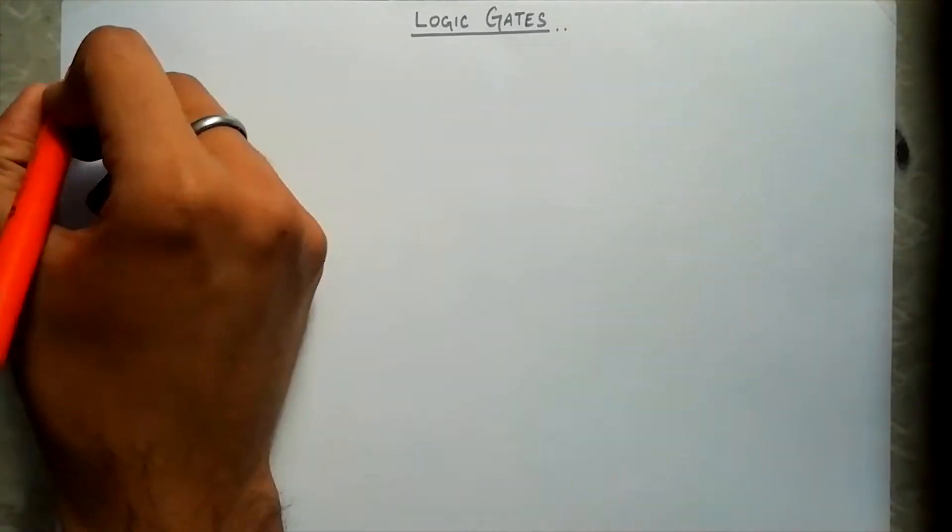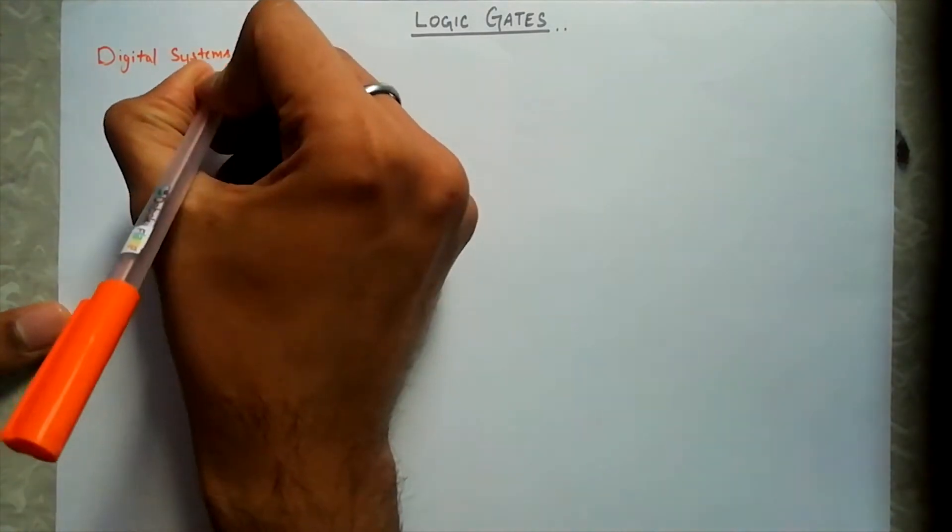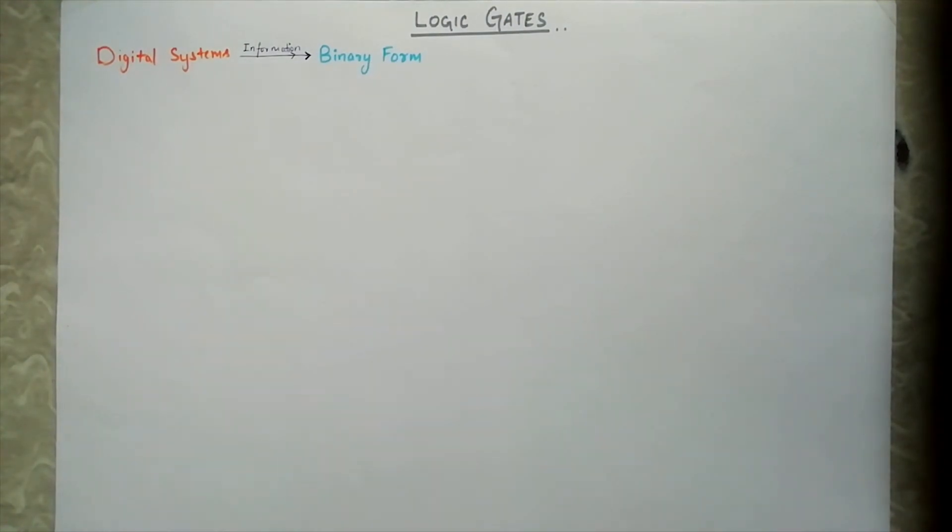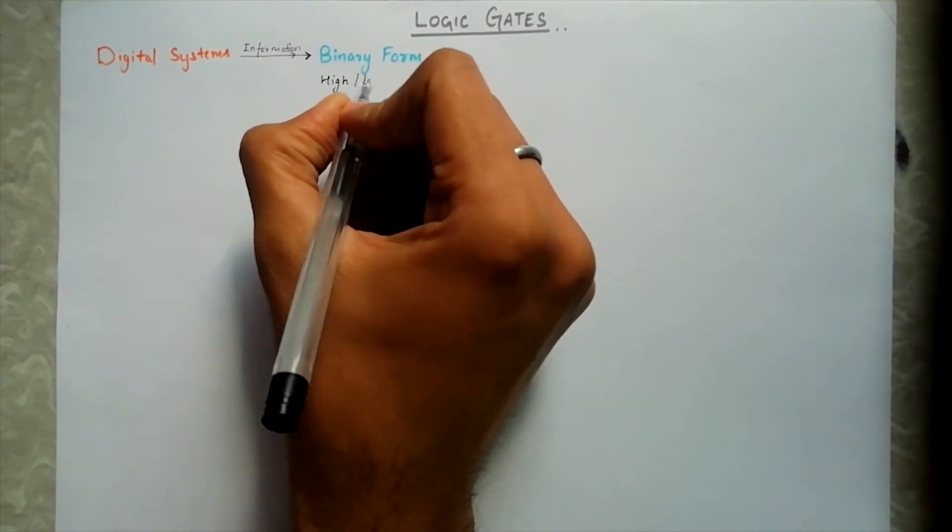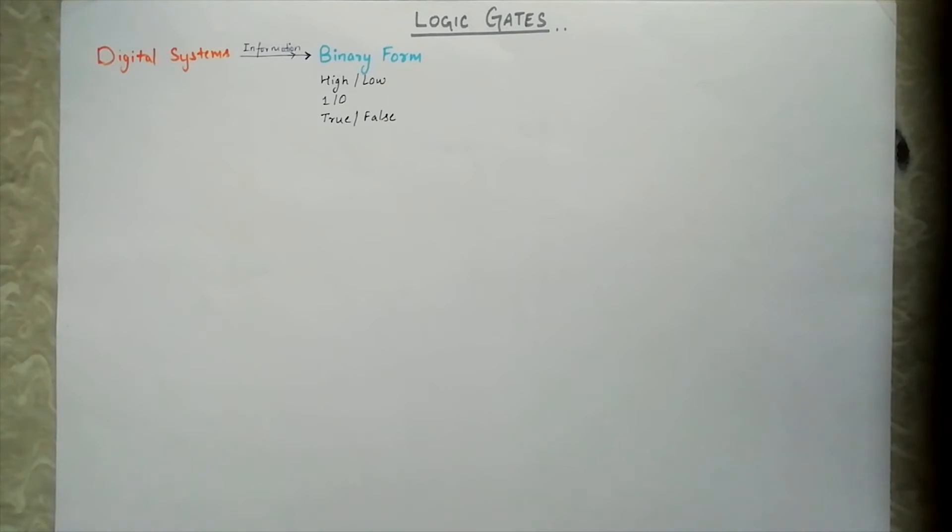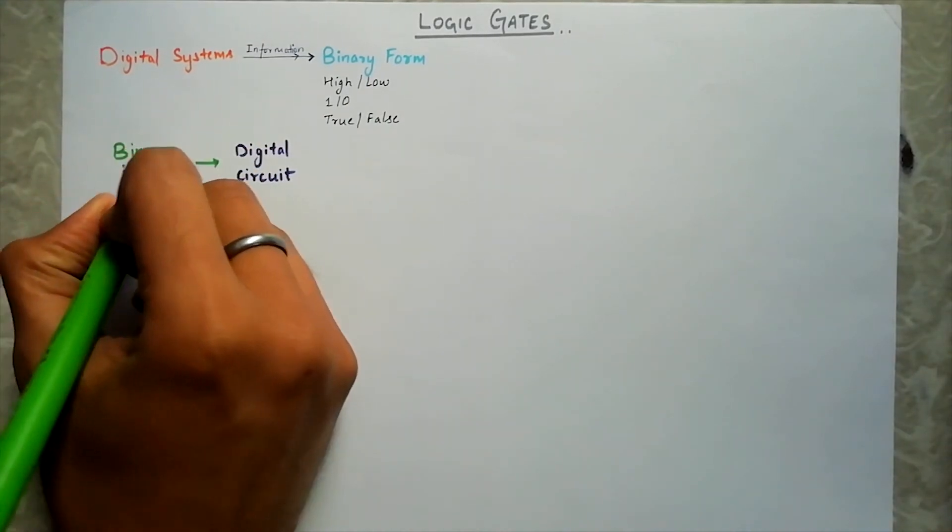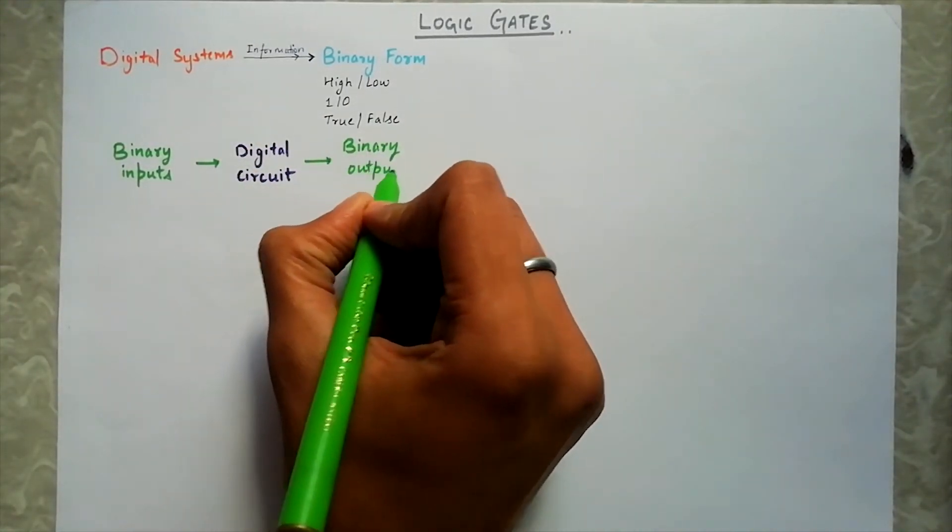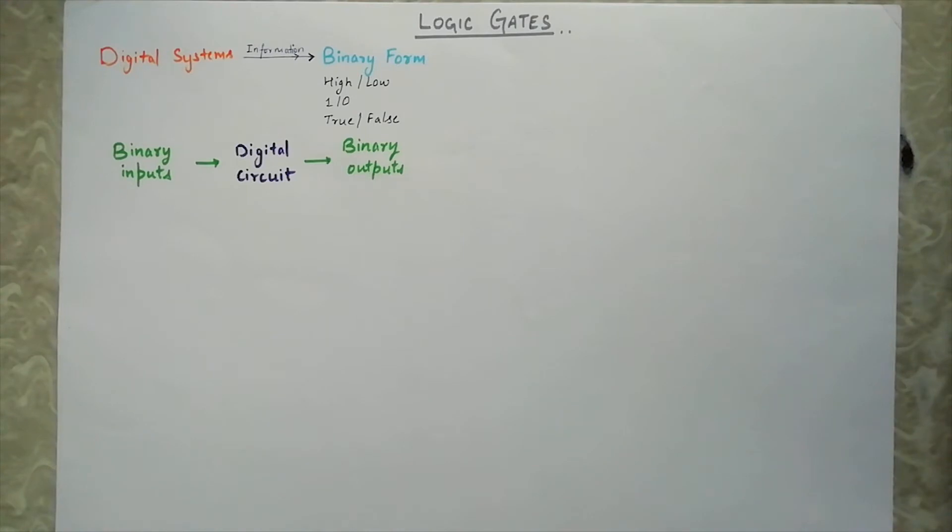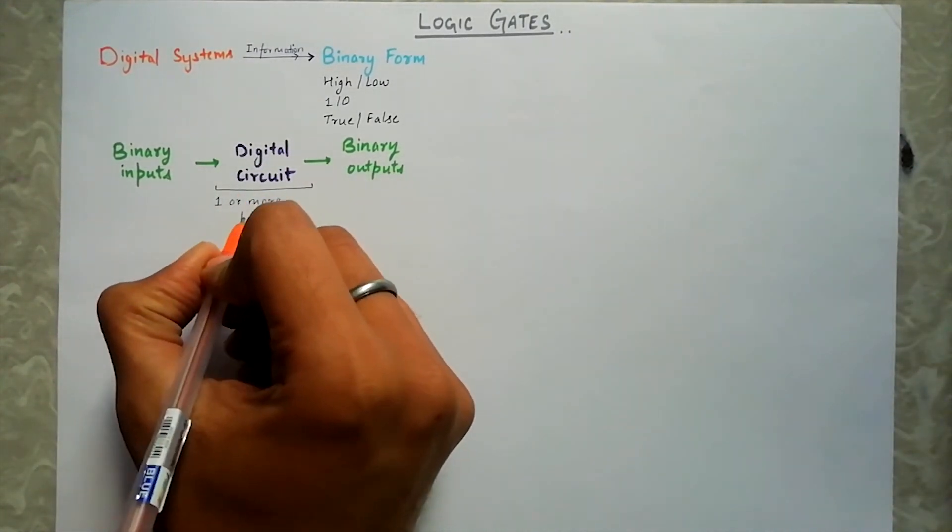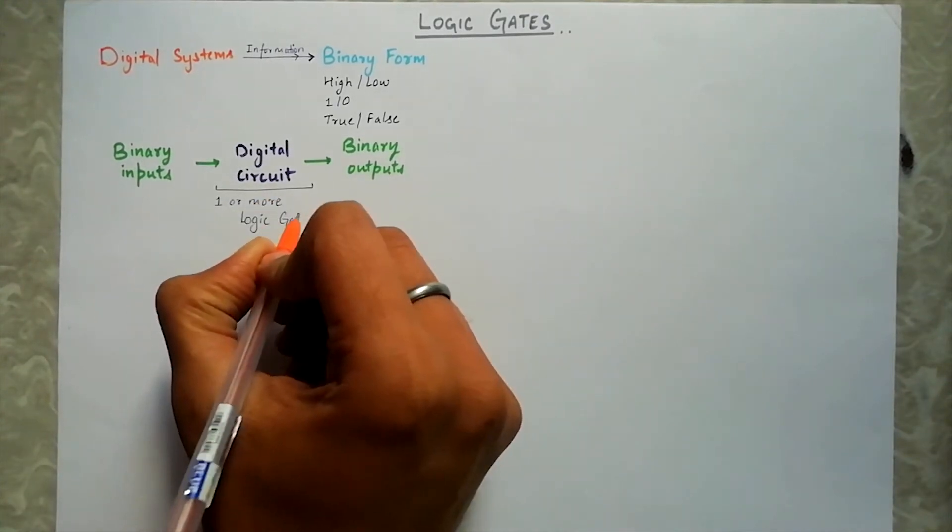In digital systems like a microprocessor, microcontroller, system on chips, etc., information is in binary form. Binary means that the information can be at a high level or a low level. These levels are also called one, zero, or true or false. A digital circuit receives input in this binary form and is manipulated and processed to produce binary outputs which can be used by some other digital circuit or it may be the final required output. And this manipulation of binary information is done by one or more logic circuits arranged in a particular manner and are called logic gates.